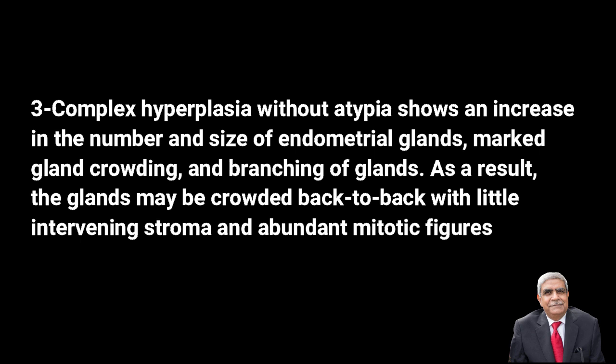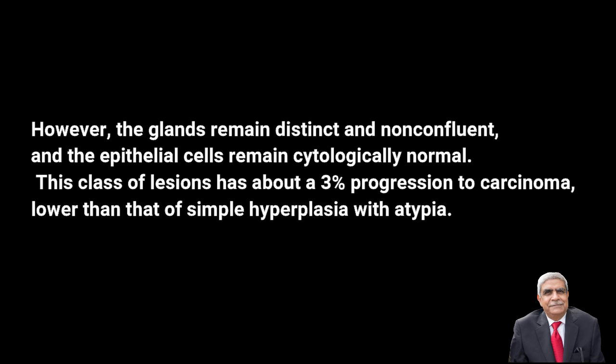Complex endometrial hyperplasia without atypia shows an increase in the number and size of endometrial glands with marked gland crowding, so that glands lie back to back. The glands show a branching pattern with very little intervening stroma, and there are abundant mitotic figures. These glands remain distinct and non-confluent, and their lining epithelium remains cytologically normal. This class of lesions progresses to endometrial carcinoma in three percent of cases.